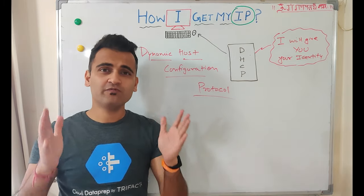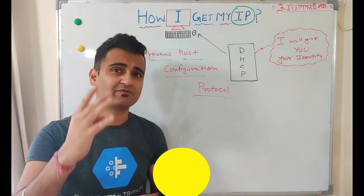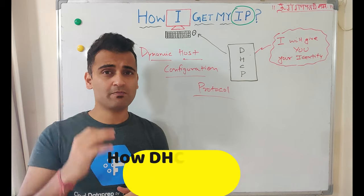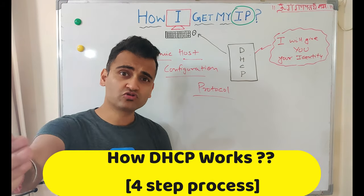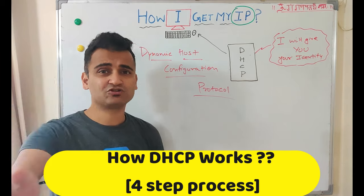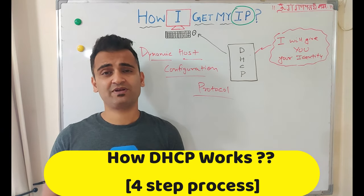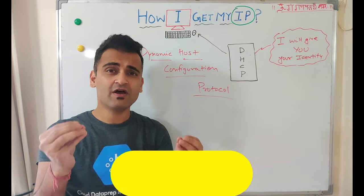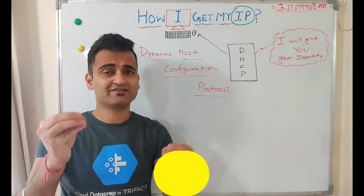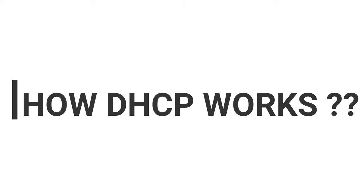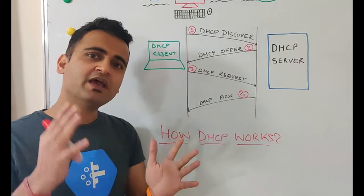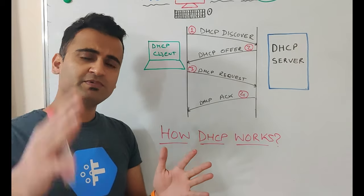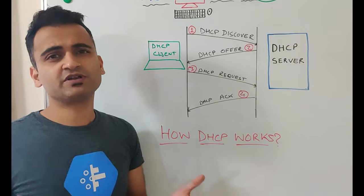Now we will understand the four steps through which a computer, as soon as it comes onto the network, talks to the DHCP server and actually gets its IP address. It's very intuitive, but let's understand exactly how a DHCP client talks to a DHCP server in this four-step process.